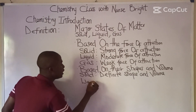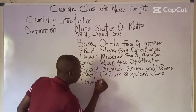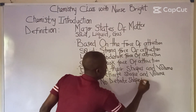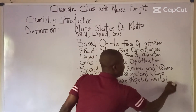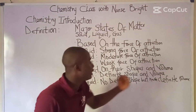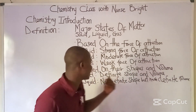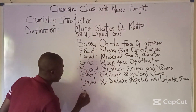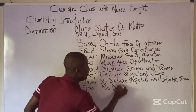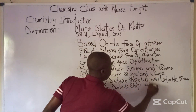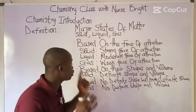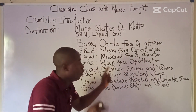Moving on to liquids: liquids have no definite shape but do have a definite volume. And for gases, gases have no definite shape and no definite volume. These differences in shape and volume must be noted when distinguishing between solids, liquids, and gases.